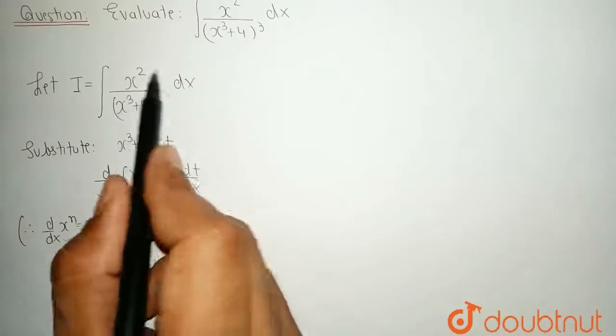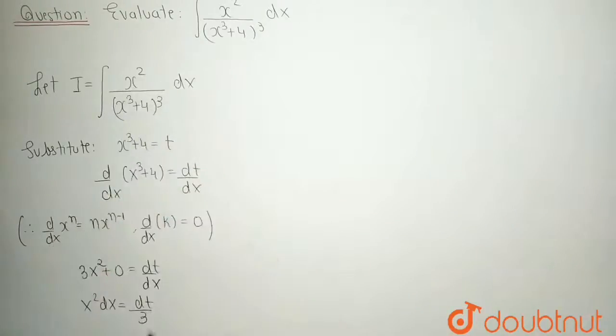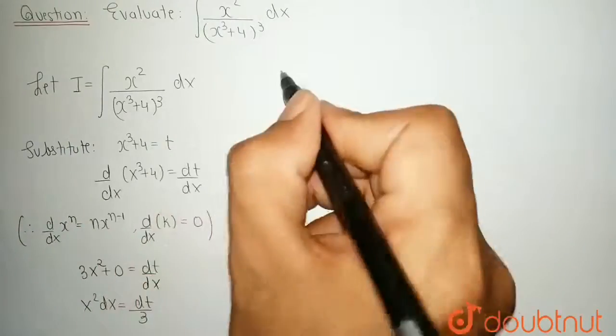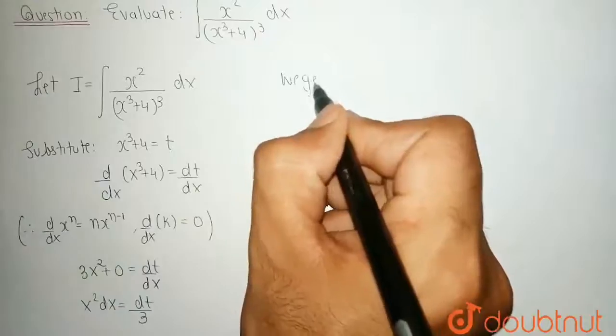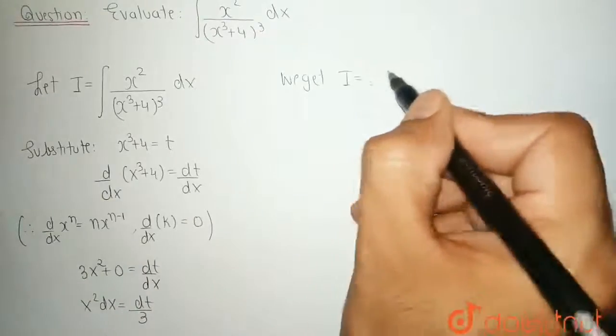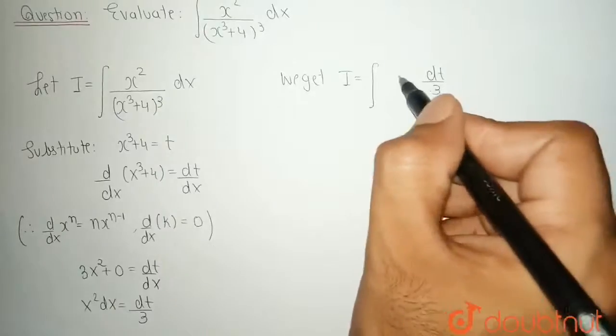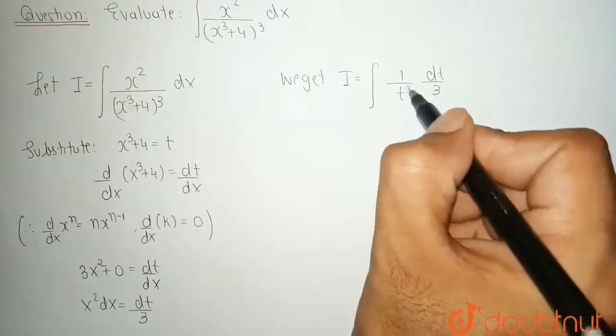Now, replace this x square dx by dt by 3 and x cube plus 4 by t. So, we get our integral I is converted into dt by 3, 1 upon t cube.